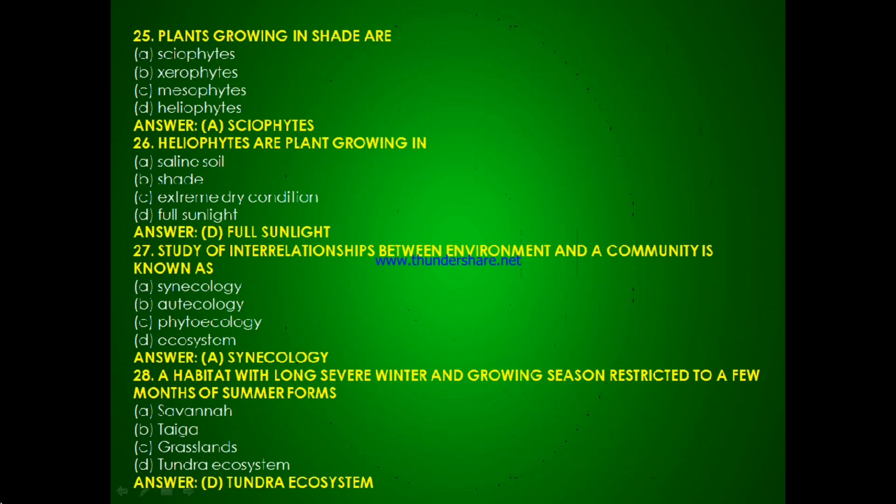Question 26: A habitat with long severe winter and growing season restricted to a few months of summer is — savannah, taiga, grasslands or tundra ecosystem? The answer is D, tundra ecosystem.